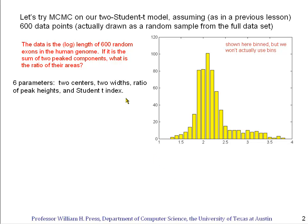So we have six parameters in the fit. We have two centers for these two distributions. We have two widths — one is visible here, and the other is not too obvious. We have a ratio of the peak heights. And then, as we saw in segment 31, we have an index for the Student t function, which tells how rapidly the tails of the two distributions are supposed to fall off.